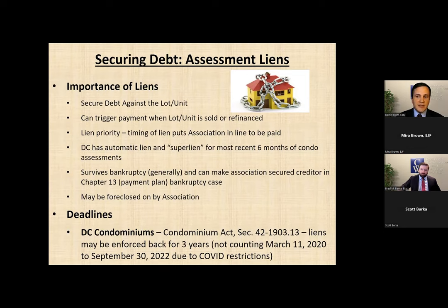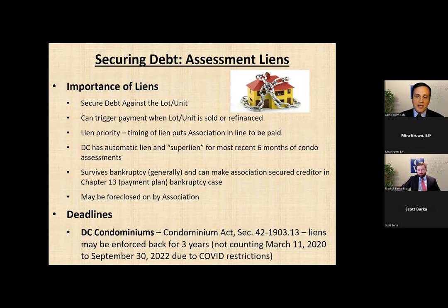The reason liens survive bankruptcy is because the debt is secured against the property, not the individual. When an individual files for bankruptcy they may be entitled to relief from debt they owe personally, but debt secured against real property typically will survive the bankruptcy discharge. It also allows the association to be considered a secured creditor in a Chapter 13 bankruptcy where a debtor is on a payment plan — the association can get in line and be entitled to payments through the Chapter 13 bankruptcy trustee according to the approved plan. So again, it's a very useful tool to allow the association to secure the debt.